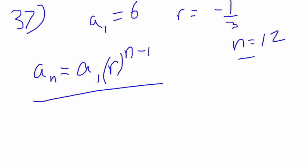We're supposed to find the 12th term, so we can just substitute in what we know. We're going to put a 6 in for A1, put negative 1 third in for R, and then N minus 1 will be 11.